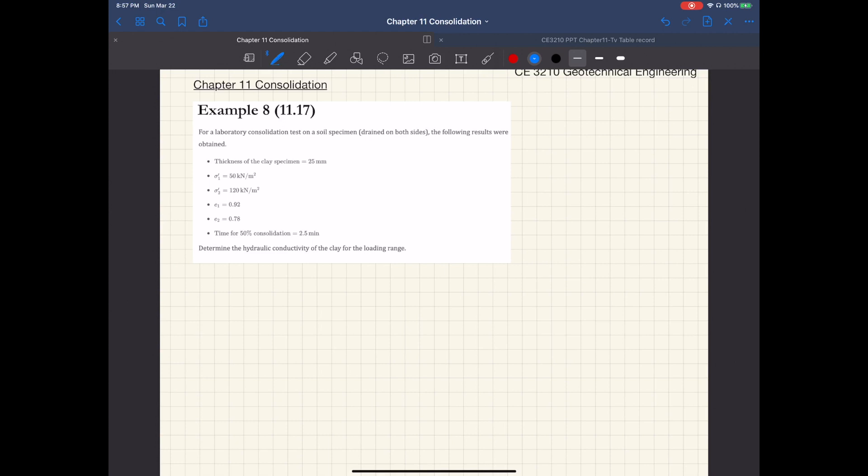Example number eight. Just as the previous example, you are given a set of consolidation test results in terms of effective stresses and the corresponding void ratios. This time the soil specimen is drained on both sides, so it's a two-way drainage case. The thickness of the specimen is 25 millimeters, basically twice the maximum drainage distance.